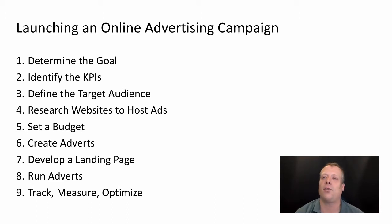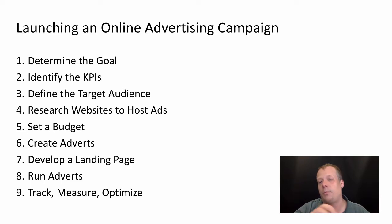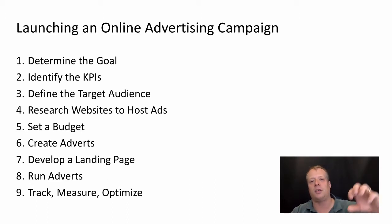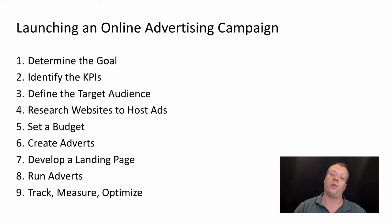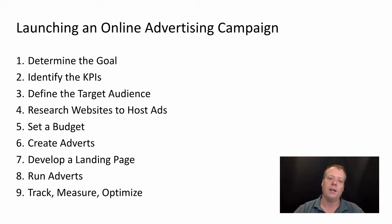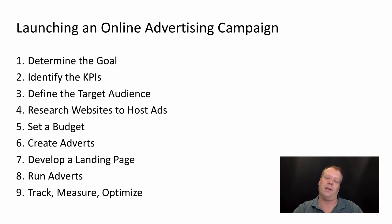When launching an online advertising campaign, you need to determine the goal, identify KPIs, identify a target audience, then research websites that would probably host those ads — maybe there's a network that fits well. Set a budget, create the adverts, and develop a landing page — that's very important, as users need a page specifically targeted toward that particular advertisement to click through to. Then run the adverts, track, measure, and optimize. Don't forget to keep an eye on any non-digital advertising the brand is doing simultaneously, since this can affect your results and message consistency. Also be careful of conflation with offline advertising when running A/B tests at different time periods.